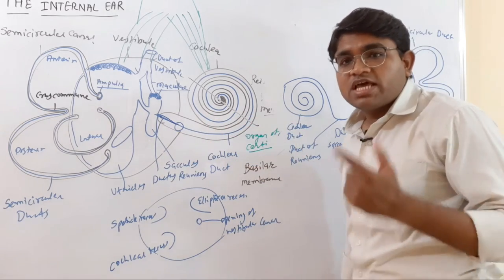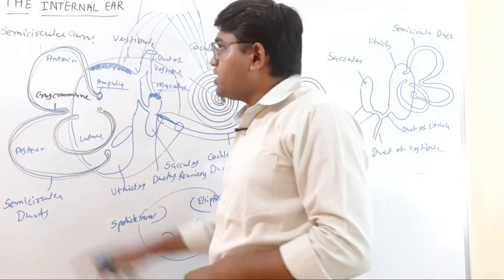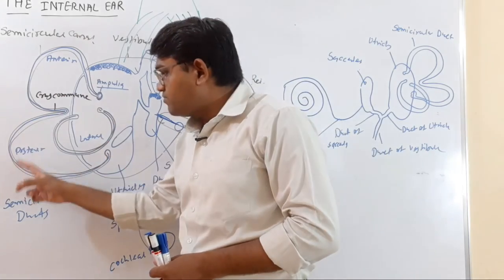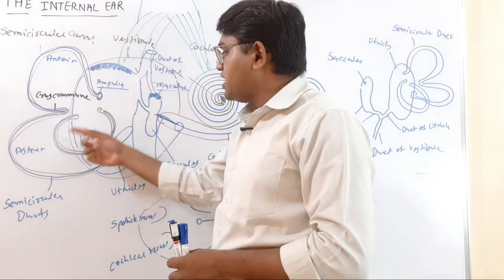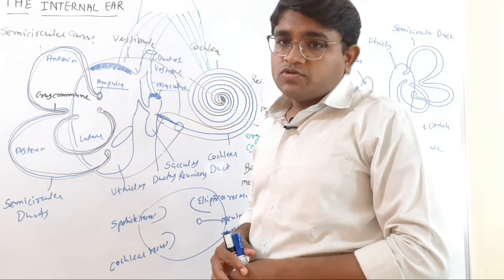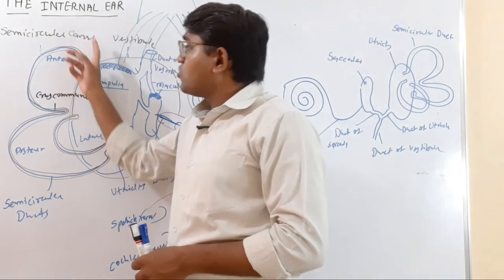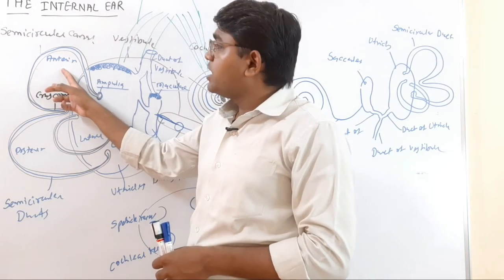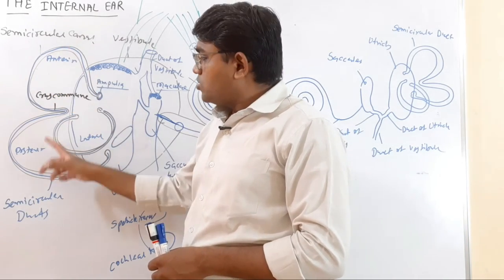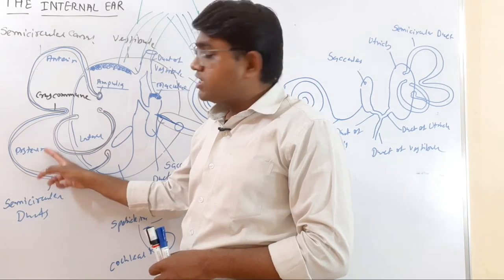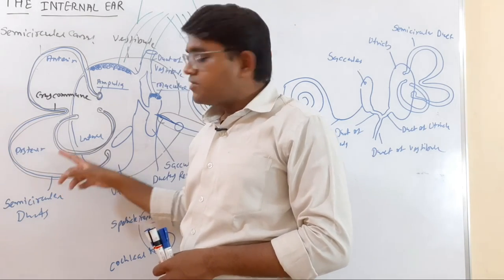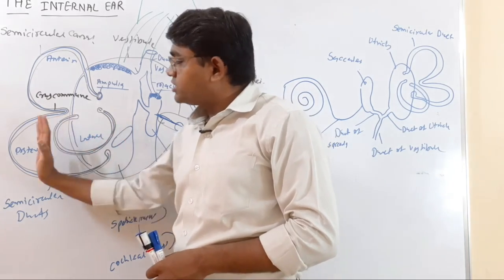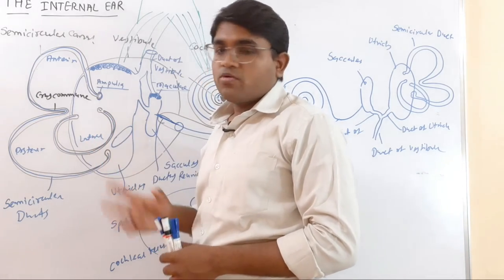The posterior end of the anterior semicircular canal and the superior end of the posterior semicircular canal are joined, forming the crus commune — one common opening. The anterior semicircular canal is in a vertical plane, the posterior is also in a vertical plane, and the lateral is in a horizontal plane. The convexity of the anterior canal is on the superior side, the convexity of the posterior canal is on the posterior side, and the convexity of the lateral canal is on the posterolateral side.